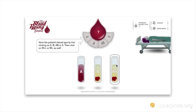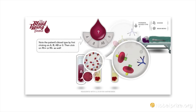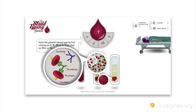The antibodies attach to antigens on the patient's red blood cells if they match. No agglutination in test tube A indicates that the patient does not belong to blood group A. Agglutination in test tube B indicates the patient does belong to blood group B. In test tube RH, the blood is RH positive if there is clumping and RH negative if there is no clumping.